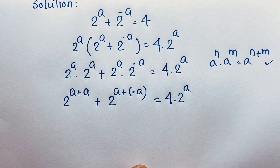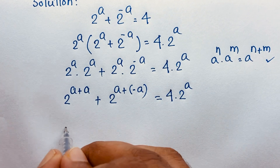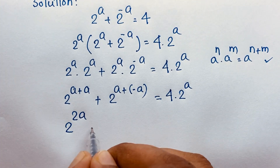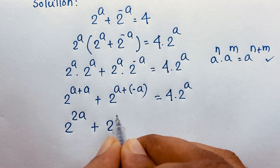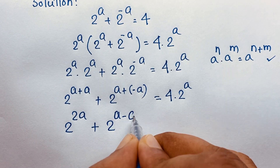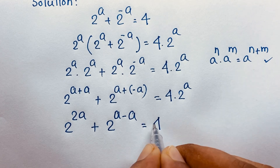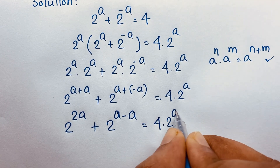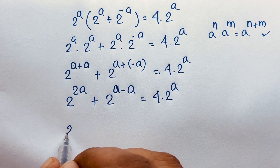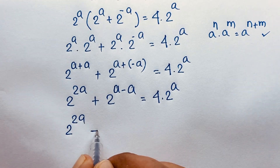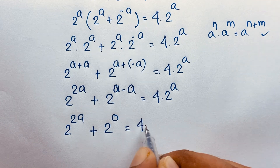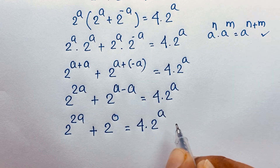This expression becomes: 2 to the power a plus a, plus 2 to the power a minus a, which gives 2 to the power 2a plus 2 to the power 0, equal to 4 times 2 to the power a.